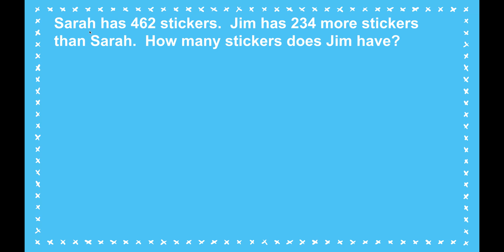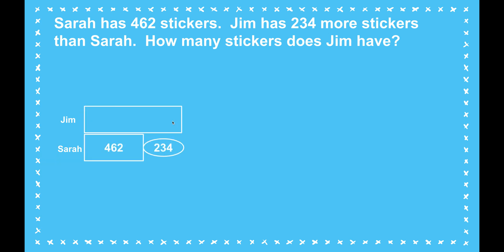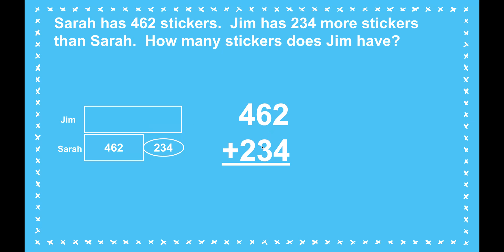Now I need to ask: who am I comparing? I'm comparing Sarah's stickers to Jim's stickers. I don't know who has more, so I need to go back and really look at the problem. Jim has 234 more stickers than Sarah — be careful, this does not say Jim has 234 stickers; it says he has more stickers than Sarah. So Jim's going to have the big bar. I don't know Jim because the problem is asking me to figure out Jim. I do know Sarah, so I'll put that in. If Sarah had 234 more stickers, she would have as many as Jim. She's got 462, and he's got 234 more than Sarah. Since Jim has more stickers, I'm definitely going to have to add. I'm going to add 462 plus 234.